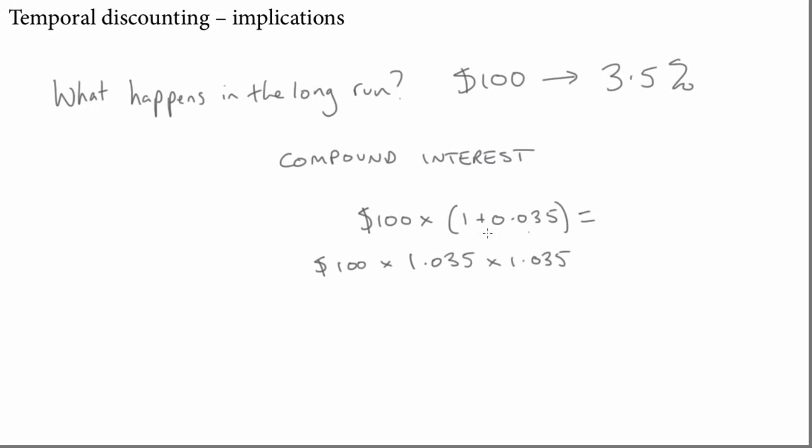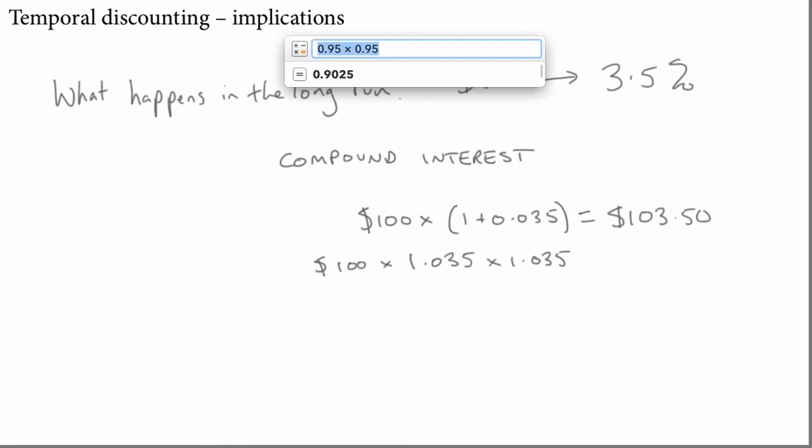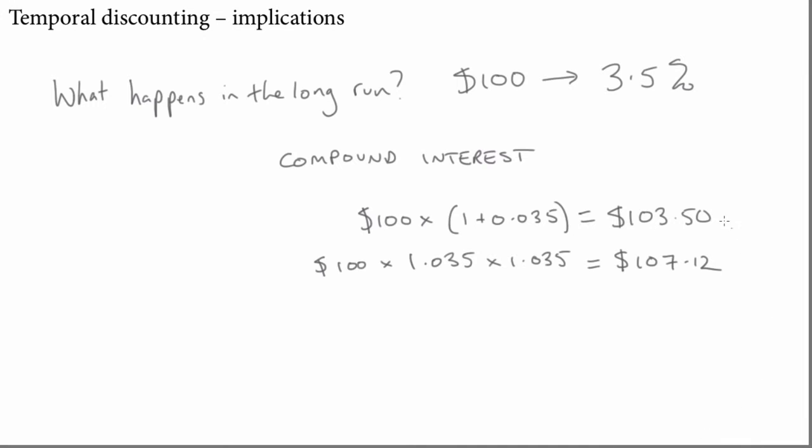So let's just quickly work out what these are. So in this case, it's $3.50 interest that you get in the first year, so it's $103.50. Now, I'll bring up my calculator. So the answer is, I'm going to have $107.12 after the second year. You'll notice that the difference between these two years is more than $3.50. It's because that's the interest compounding.